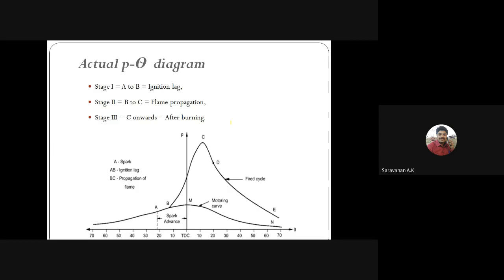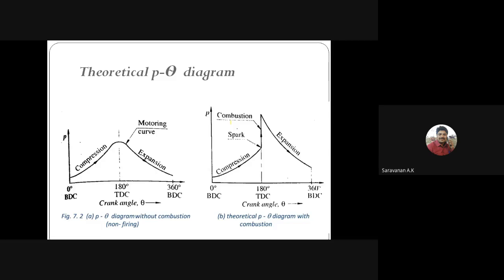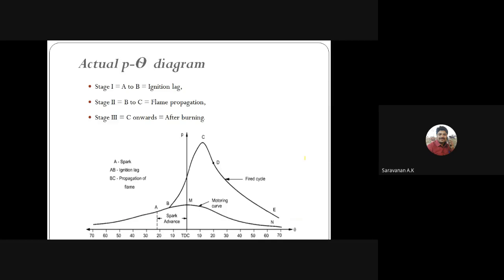The theoretical and actual P-theta diagrams have significant differences. In the theoretical graph, all lines are straight — compression, pressure increase, and expansion are all straight. In the actual case, the pressure versus crank angle diagram has three stages: ignition lag, flame propagation, and after burning.